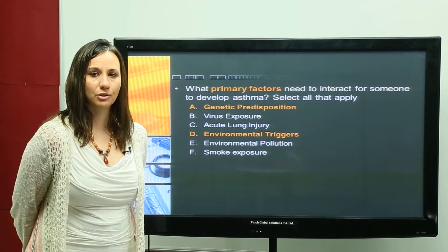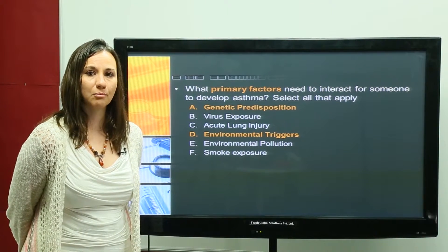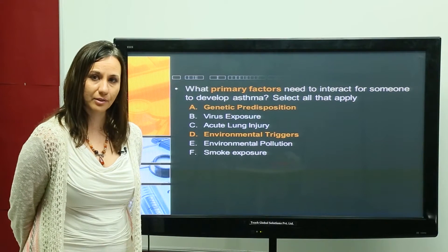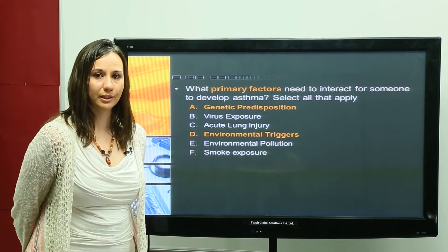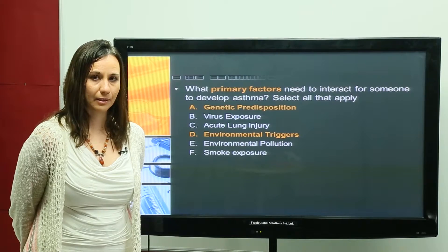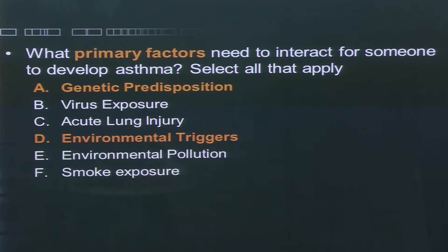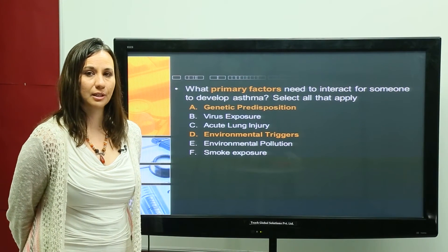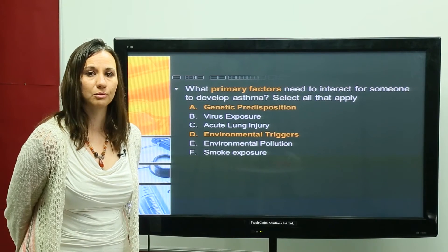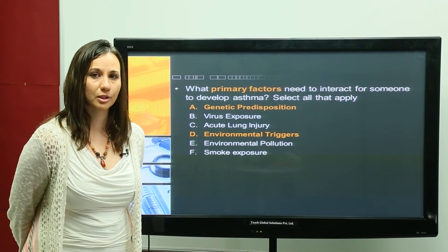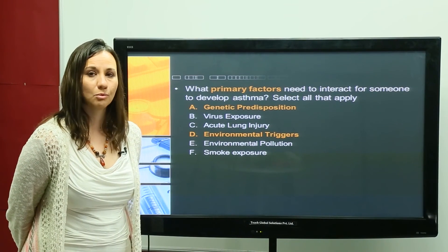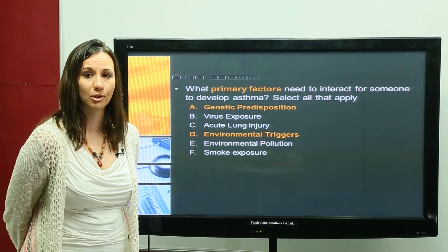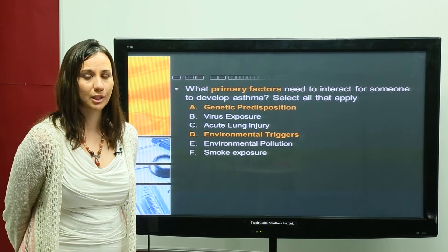The atopic march refers to the progression seen in children who have a parent or relative with asthma — these children are about 50% likely to develop one of these allergic diseases. Typically, they develop a skin condition like eczema first, which then progresses to allergic rhinitis — runny nose, itchy eyes, allergic shiners under the eyes, or an allergic salute crease over the nose — and finally progresses into the lungs where they develop asthma.